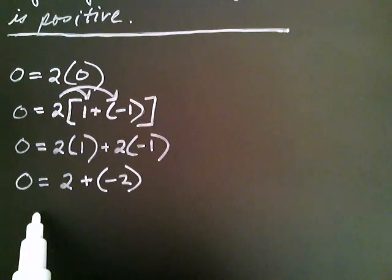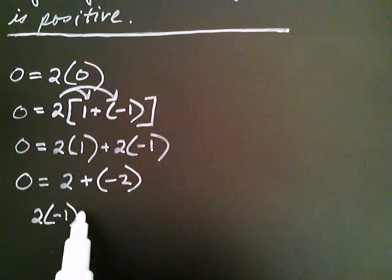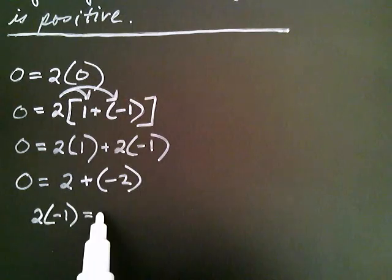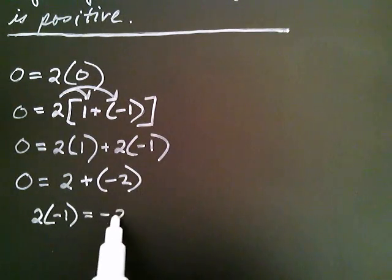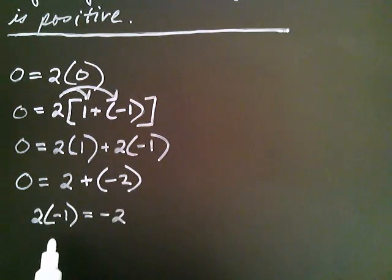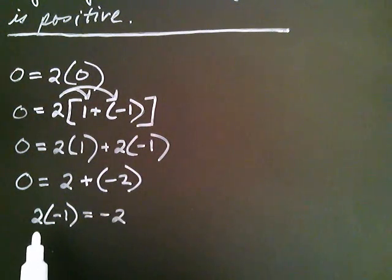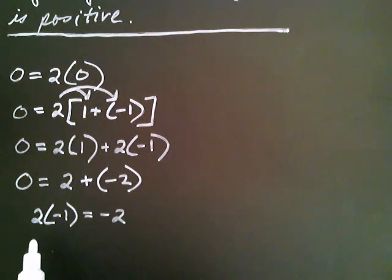So we just said two multiplied by negative one equals negative two. Now multiplication is what we call commutative — that is, you can interchange the order. So three times five is the same as five times three.